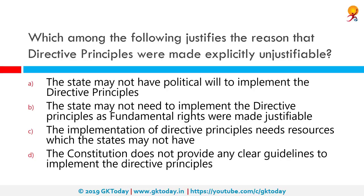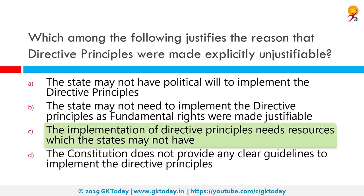Which among the following justifies why directive principles were made explicitly unjusticiable — that is, they cannot be taken to a court? The correct answer is that the implementation of directive principles needs resources which the states may not have. The idea of directive principles was borrowed from the constitution of Ireland. The directive principles are non-justiciable because they are not legally enforceable by courts for their violation, so the government cannot be compelled to implement them.